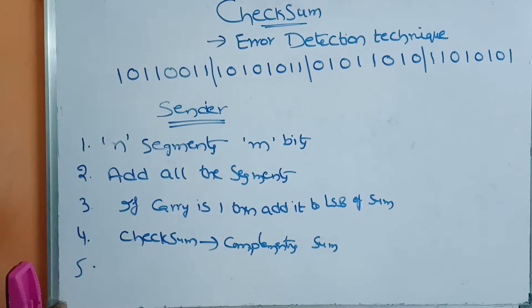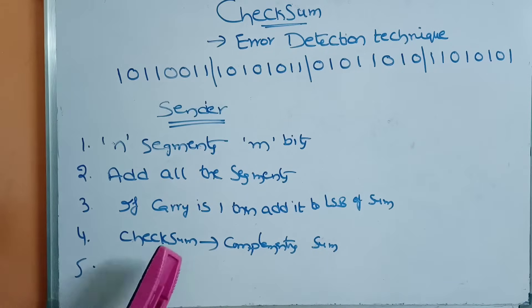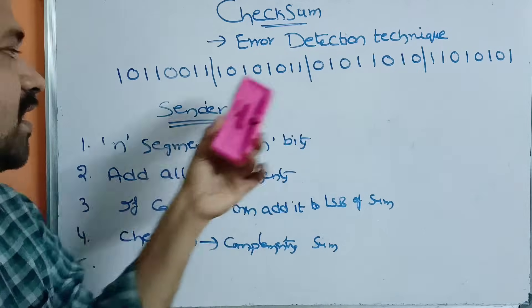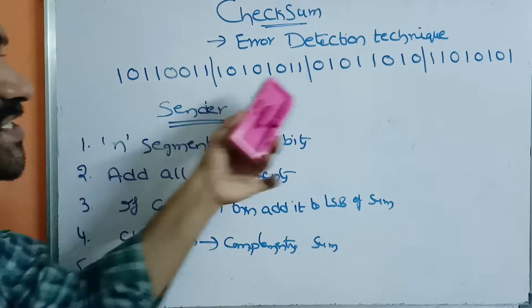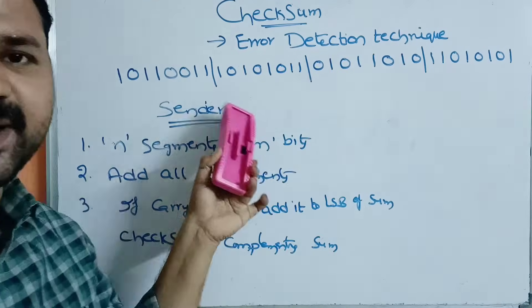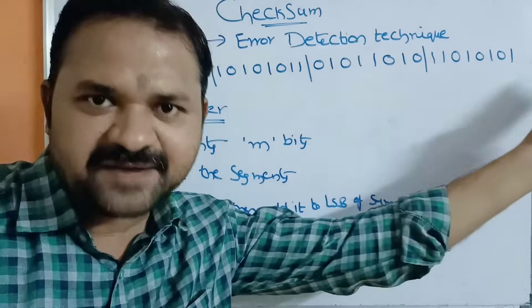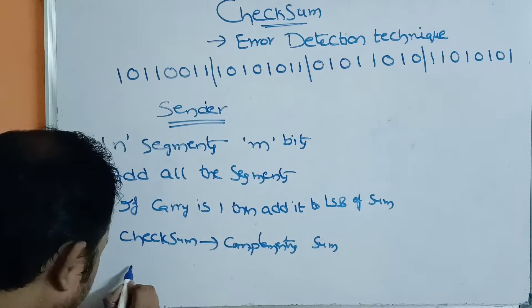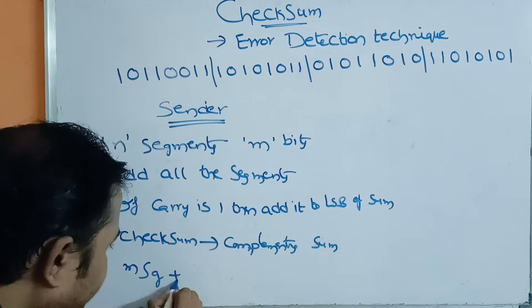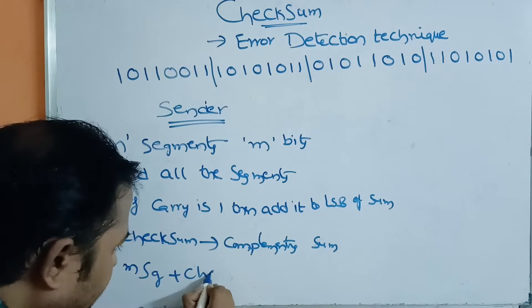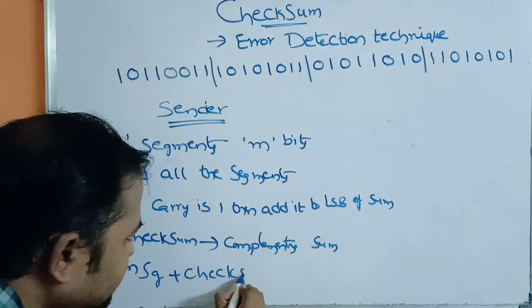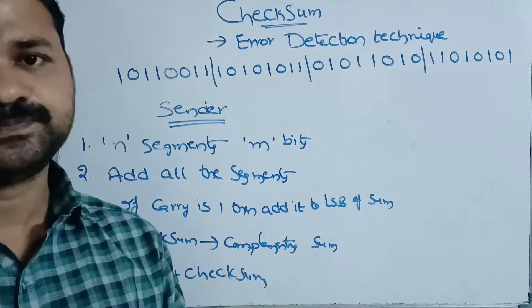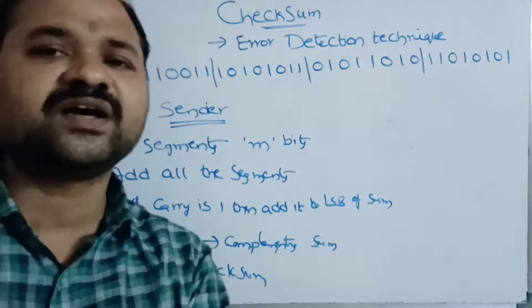The last step is that the sender sends the entire message — all 4 segments — together with the checksum. So message plus checksum is sent to the receiver.